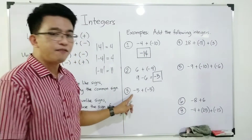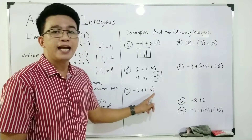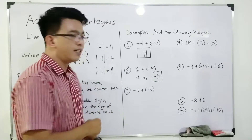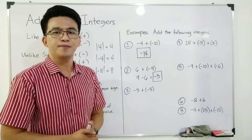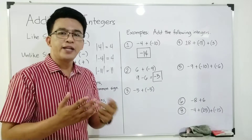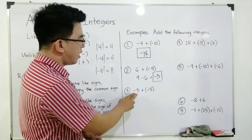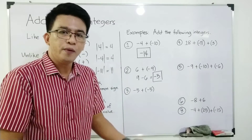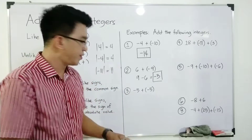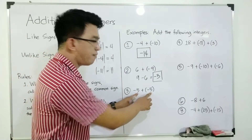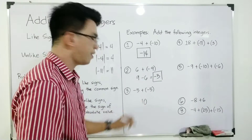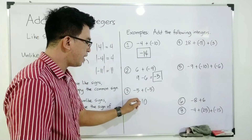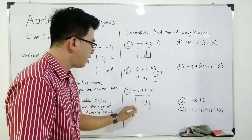Now, let's move on with item number three. We have negative 5 plus negative 5. You can pause the video if you want to try answering. As you can see, this one is negative 5 plus negative 5 — they have like signs. What we will do is add the numbers: 5 plus 5 is 10. And then copy the sign of these integers, which is negative. The answer is negative 10.